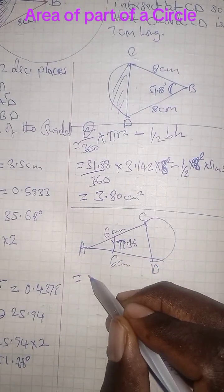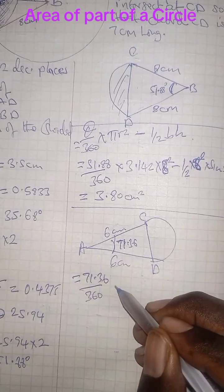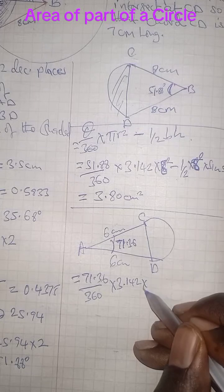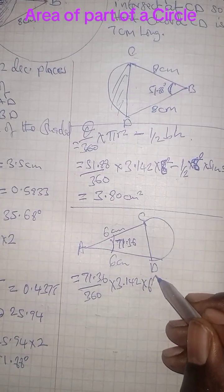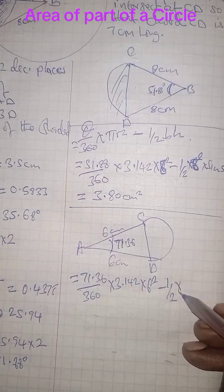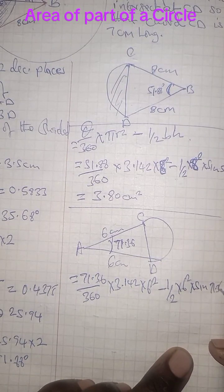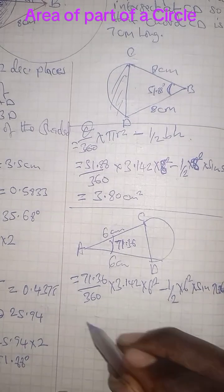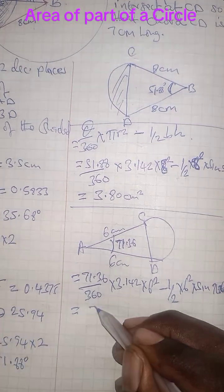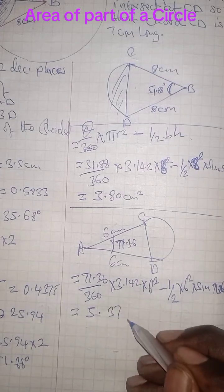We shall have our angle is 71.36 over 360, multiplied by our pi, 3.142, multiplied by the radius squared, less the area of the triangle is half, multiplied by 6 squared, multiplied by sine 71.36. Put all these figures in a calculator to be able to get 5.37 cm squared.